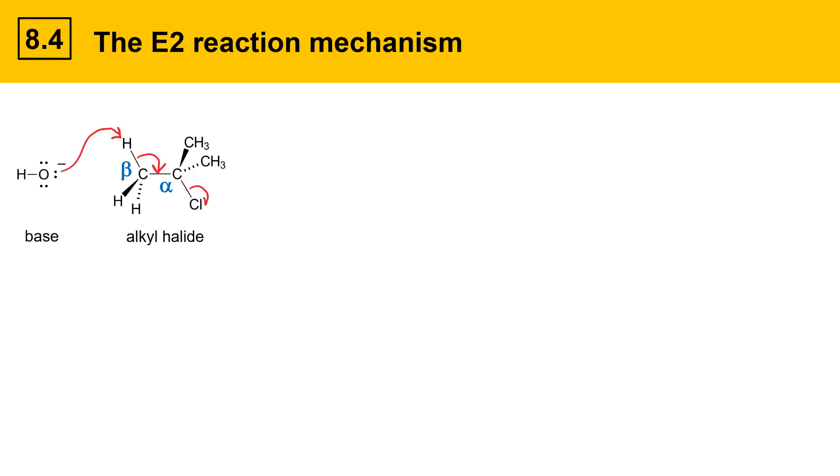On its way to products, the reaction goes through a transition state that's shown here. The transition state has multiple bonds that are partially formed and broken. There's a partially formed bond between the oxygen and the hydrogen, a partially broken bond between the hydrogen and the carbon, a partially formed carbon-carbon double bond with double bond character developing, and the leaving group is in the process of leaving.